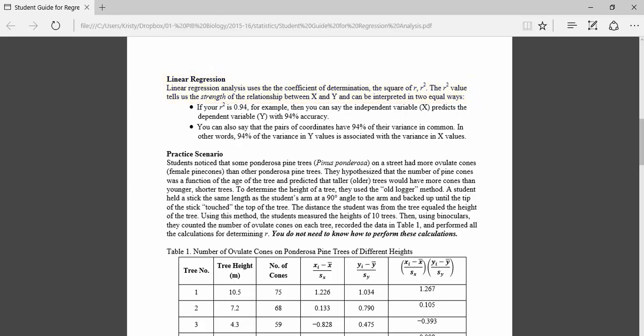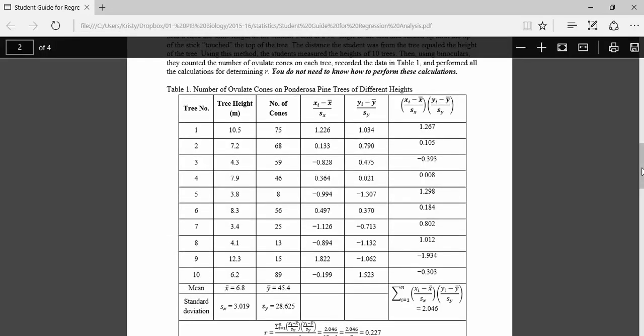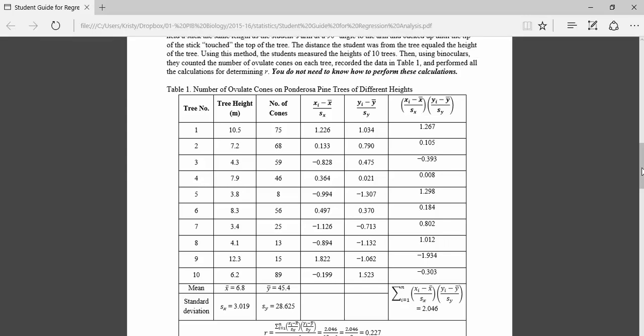The R squared value tells us the strength of the relationship between X and Y. If you are creating a scatterplot, you're looking to see how well X can predict Y. In this practice problem here, all these calculations are shown. You don't need to know how to do these calculations. They're just kind of laid out to show you how similar it is to some of the other statistical tests that we've learned about. For example, here they're comparing height of a tree to the number of cones on the tree.